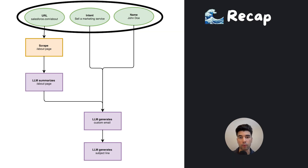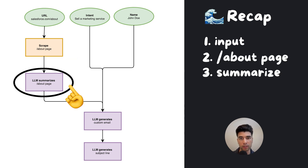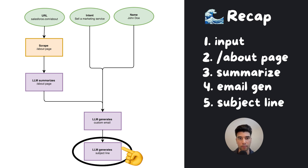To recap: we first needed an input — in our case a row with a name, selling intent, and the about page URL. We scraped the about page, summarized it, and then took all of these to craft our email using the Llama3 8-billion-parameter model. We then finished the process by generating a subject line using the same model.